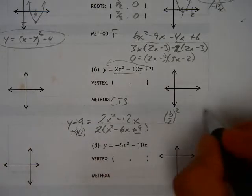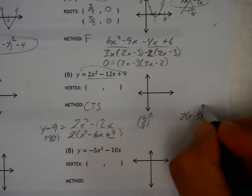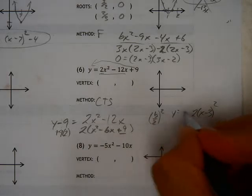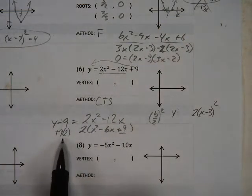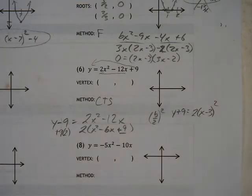So I can clean up this side here. I get 2 times x minus 3 squared. And on this side here, I've got a y. It's a minus 9, but then a plus 18. So that's y plus 9.